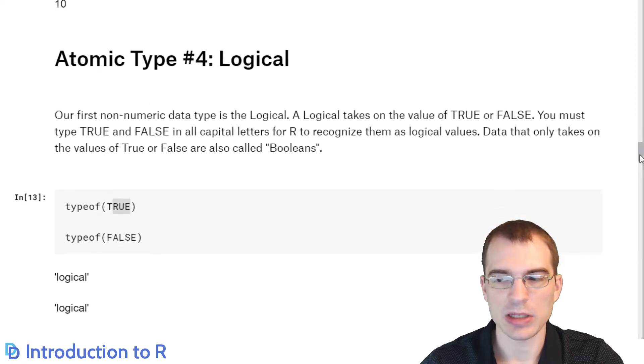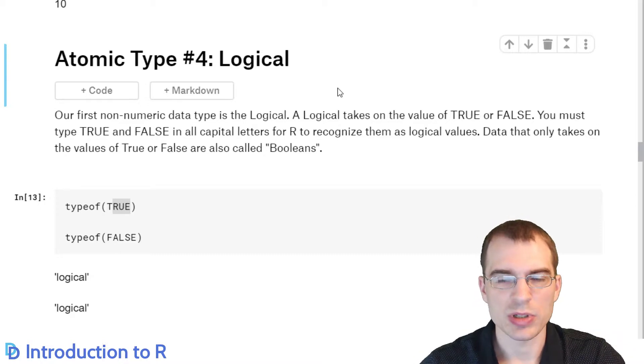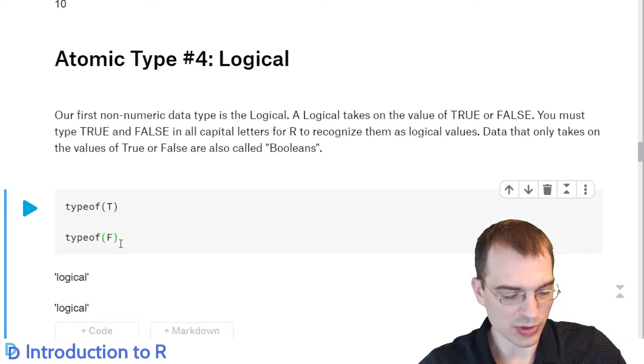So the next atomic data type is the logical. Now, logical is just what's known as a Boolean value or a true-false value. In R, when you're working with logicals, you write them out by writing out true or false in all capital letters. So in R, this big capital TRUE is indicative of the true logical, and the false is the false logical. So if we run the types, you can see they're logicals. You can also use only the first letter if you would like. So those also evaluate to true and false logicals.